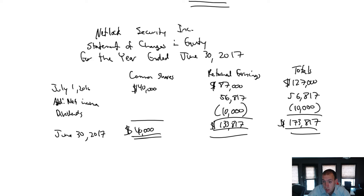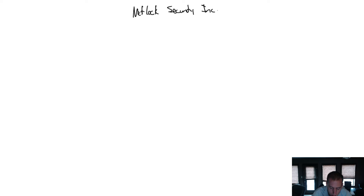We have just completed our statement of changes in equity — time to move on to the statement of financial position, also called the balance sheet. Let's do it. The three-line title: name of the company, Netlock Security Inc., and name of the statement — statement of financial position or balance sheet.